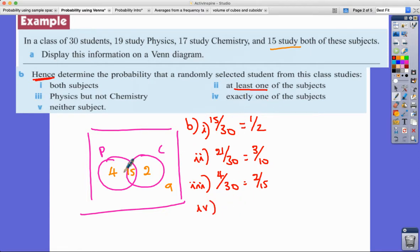And then exactly one of the subjects - so I've got these four people who just do physics, I've got these two people that just do chemistry, so there's six there all together out of 30, one fifth. And finally neither subjects - these nine people are not into physics or chemistry, so 9/30 or 3/10.